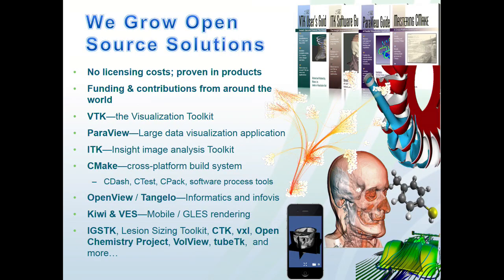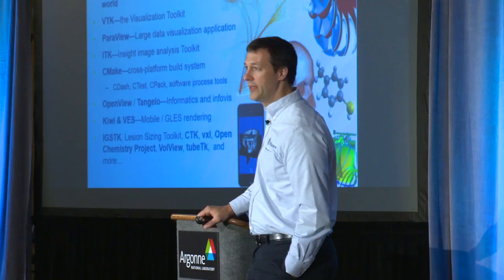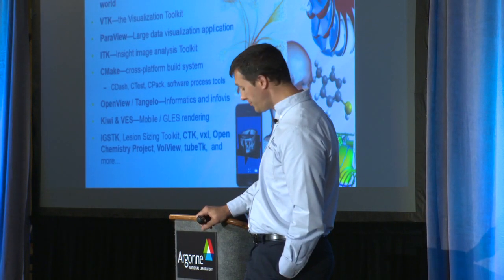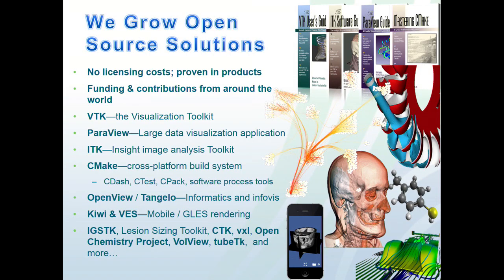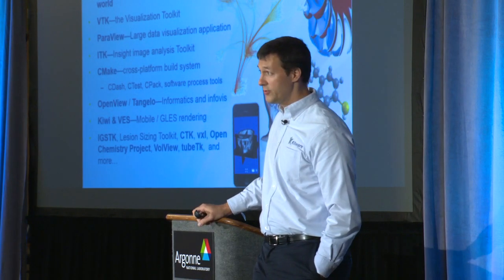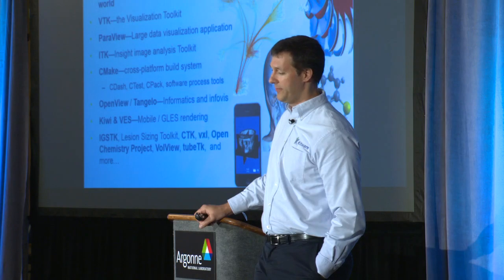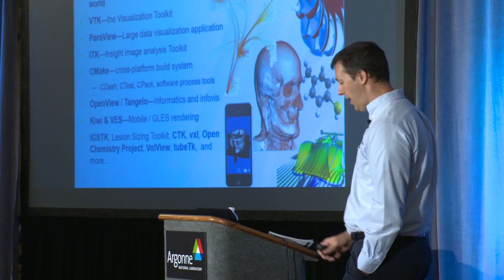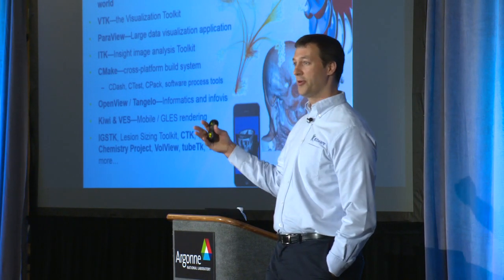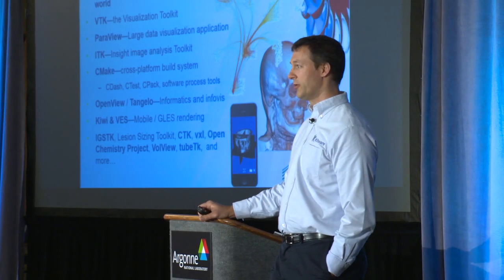We're basically an open source development company. When I started working there, I wondered: am I going to have a job in five years because we're giving our software away for free? How do you make money as a company doing open source? Basically, it's growing these open source solutions, working with customers and collaborators to extend things. We're selling improvements in the software rather than the software itself. It's a BSD license, so you can sell it if you want. We want to support science and noble goals — open source, open tools, open formats.